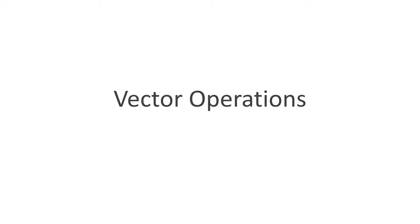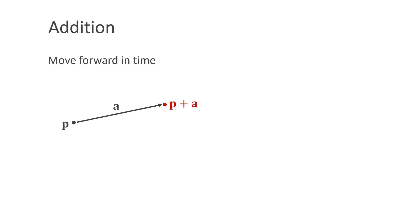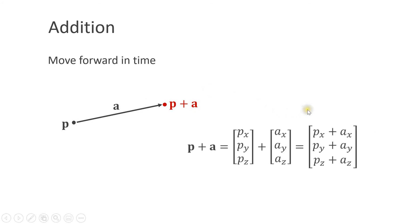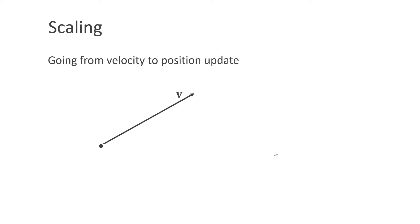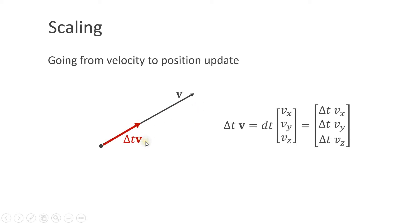To do simulations, we need vector operations. The first one is addition — we can use this to move forward in time. If we have p, the position of a particle, and we want to add a, we simply add all the components individually. A second operation is scaling, which we can use to go from a velocity to a position update. Scaling means multiplying a vector by a simple number, here delta t, and we simply multiply all the components individually.